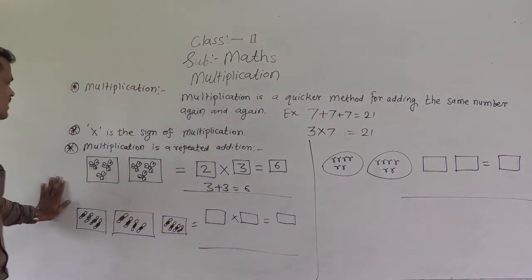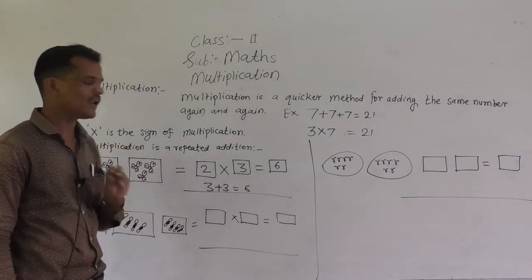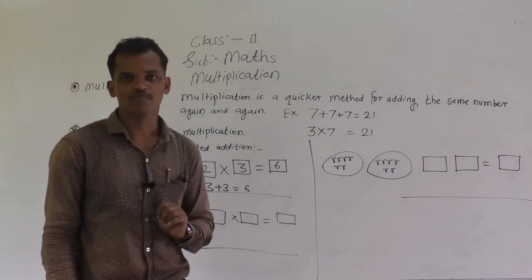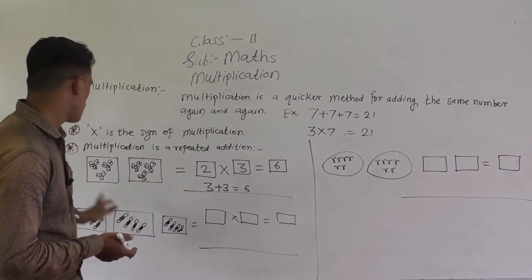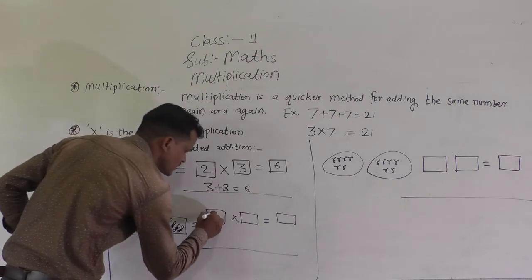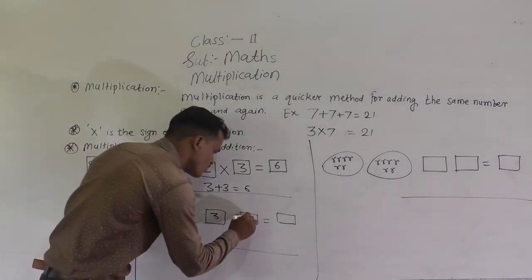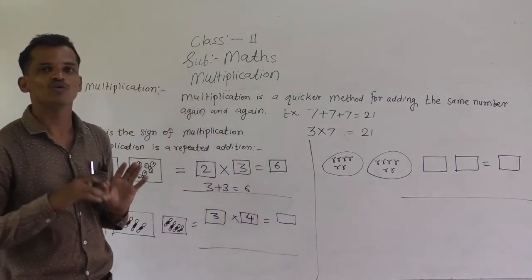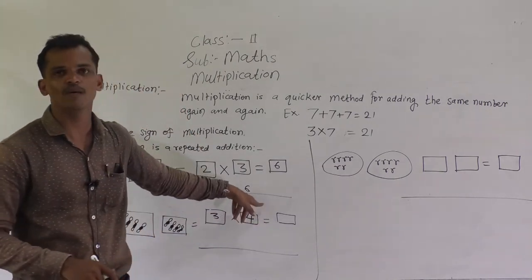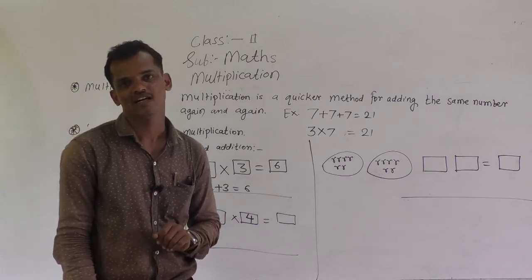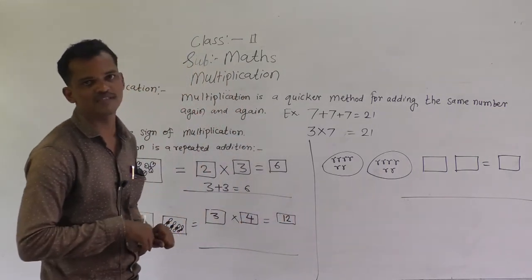Next, see — there are 1, 2, and 3 groups, and in each group there are 4 toffees. So make the multiplication fact for this information. How many groups are there? 3 groups. So 3 times, and in each group there are 4 toffees. Write here: 3 times 4. Recite the table of 3 up to 4 — 3 fours are 12. So there are 12 total toffees.